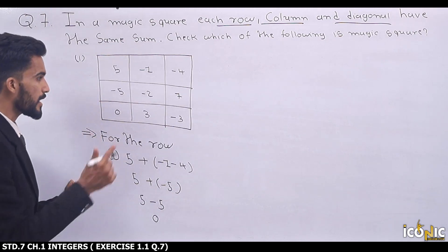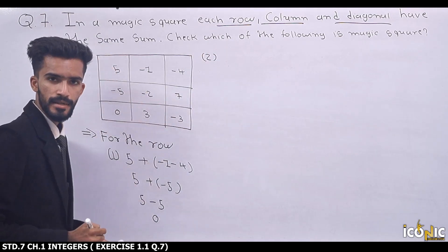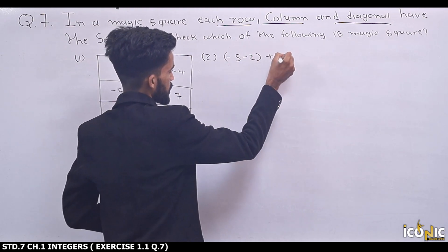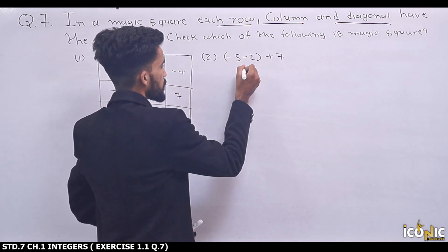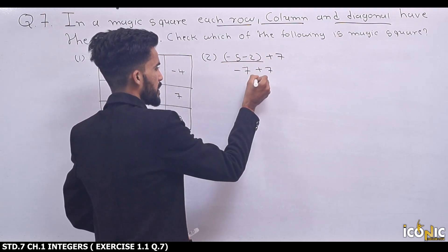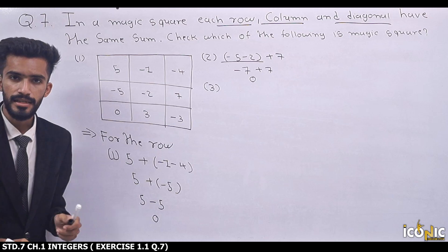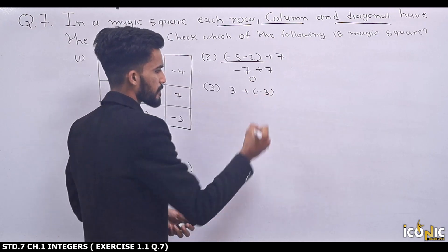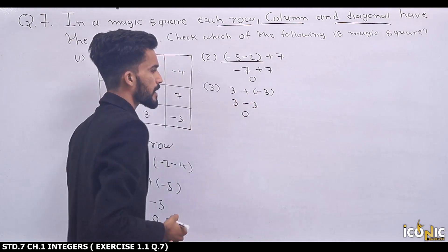Now second row: -5, -2, and 7. Minus values together: -5 minus 2, same sign addition gives -7. Then -7 plus 7 equals zero. Third row: 0, 3, and -3. Zero has no effect, so 3 plus minus 3: opening the bracket gives 3 minus 3 equals zero. So all three rows give zero.